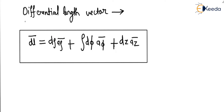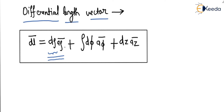We start with the differential length vector in the cylindrical coordinate system. If the parameter rho changes by a small value, this change is indicated by dρ, and in vector form it will be indicated by dρ aρ. So dρ aρ corresponds to the change in the rho direction.